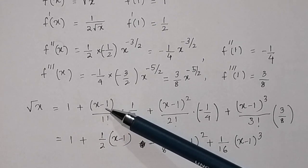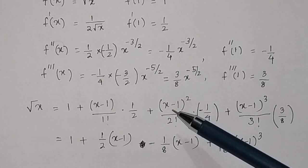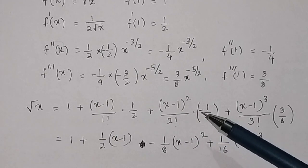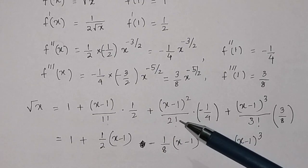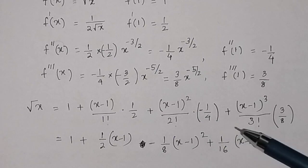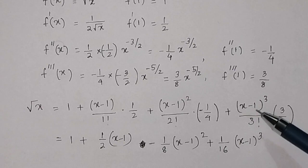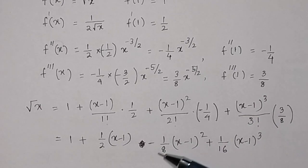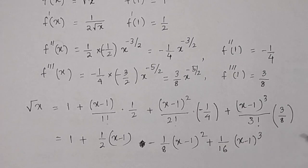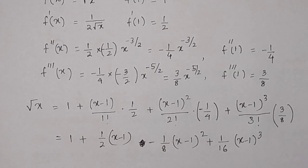Simplifying each term: the first term is 1, the second term is (1/2)(x−1) since 1! = 1, the third term is −(1/8)(x−1)² since 2 × 4 = 8, and the fourth term is (1/16)(x−1)³ since 3! = 6 and 8 × 2 = 16. This gives the third degree Taylor polynomial approximation of √x about 1.